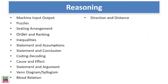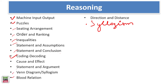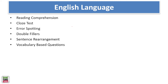For reasoning ability, topics include: machine input-output, puzzles, sitting arrangement, order and ranking, inequalities, statements and arguments, statements and assumptions, statement and conclusion, coding-decoding, syllogism — which is very important — blood relations, Venn diagrams, and cause and effect. A majority of questions will be from puzzles and sitting arrangement, contributing 15–20 marks directly.